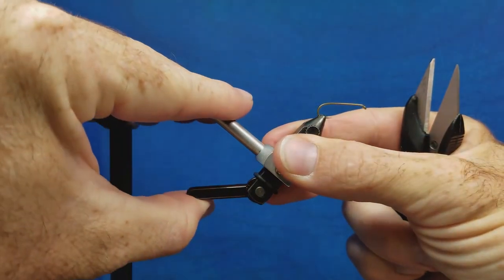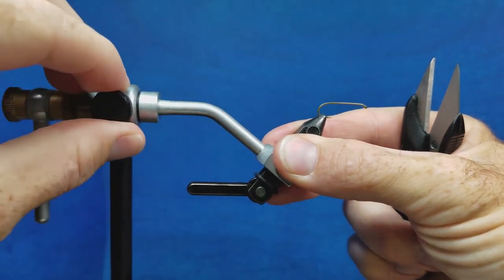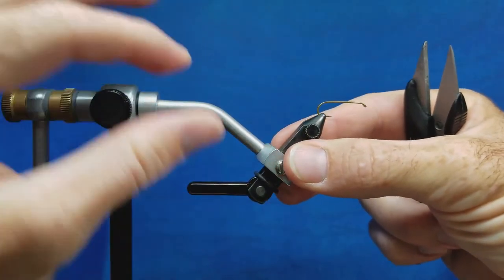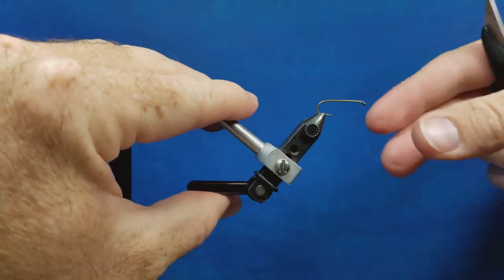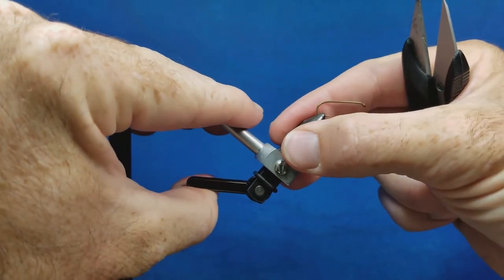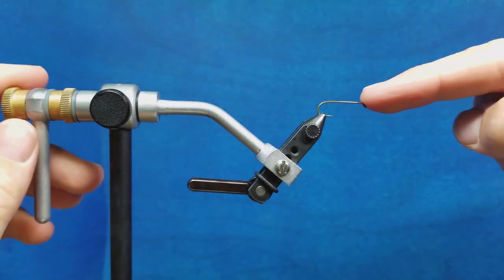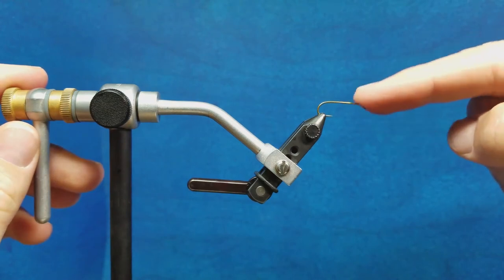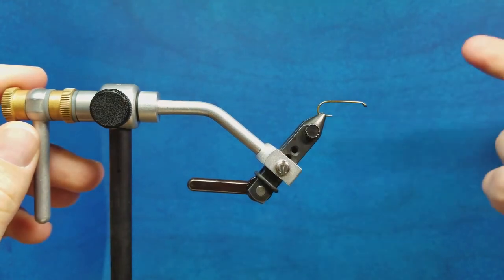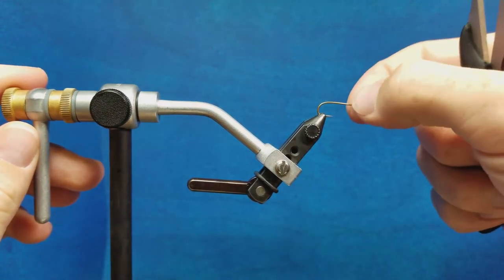When I secure these jaws with this little lever, which may be present on your vise, you may have a lever down here on the top. Whatever the securing mechanism is, I want that snug enough that I can take my finger and twang the end of that hook and have it not move or go anywhere. It needs to be sound and secure.